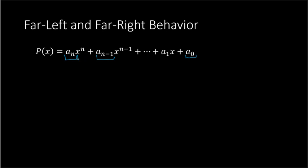We have our variable component — x to some power, then x to the next degree less than that. So if this were like 4th power, the next one would be x to the 3rd power, then 2nd power, 1st power, and then constant. If this is our polynomial in general, there are some things we can determine just by looking at the coefficient of the leading term — the term with the highest degree — specifically the coefficient and exponent. We can determine what the left and the right side of the graph is going to do.